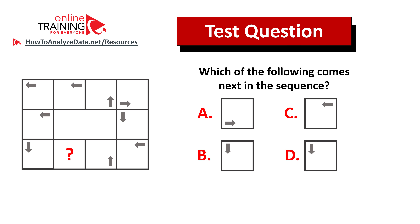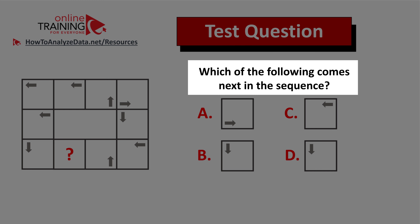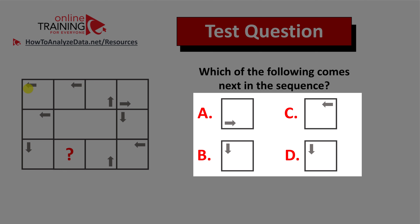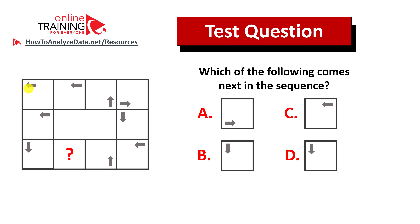Here's a question from the real test you can try to solve on your own. Which of the following comes next in the sequence? You're presented with a sequence of boxes, each containing an arrow pointing in a different direction. You also have four choices — A, B, C, and D — with boxes containing arrows. Feel free to pause and try this challenge. Post your answer and rationale in the comments for my feedback; I'll post a detailed answer in a future video.